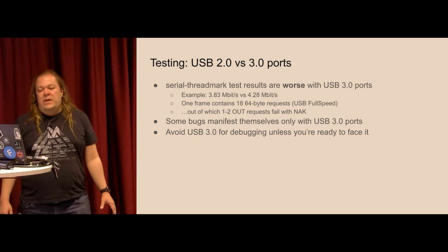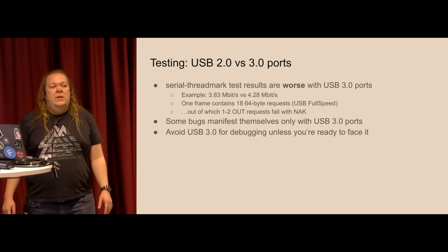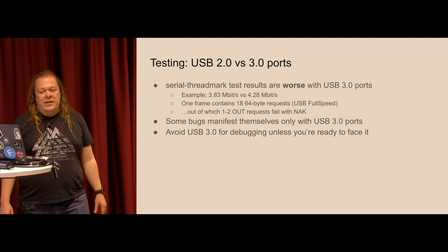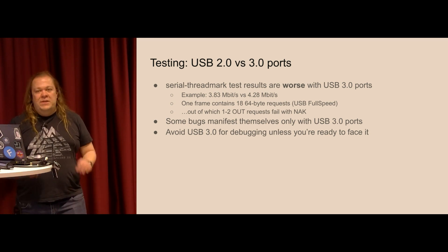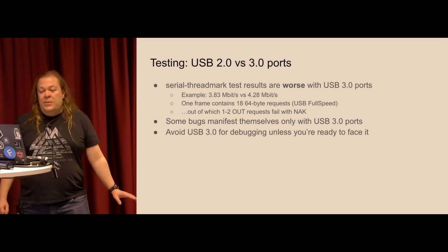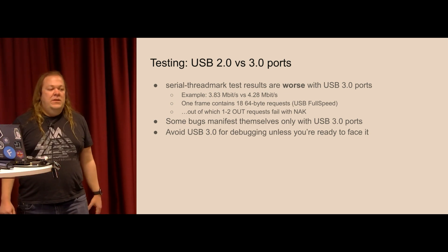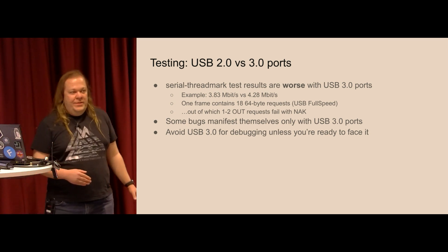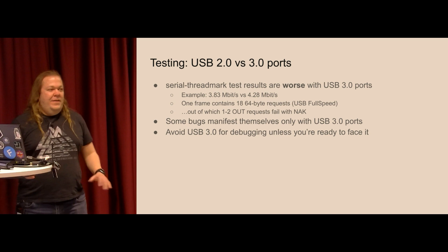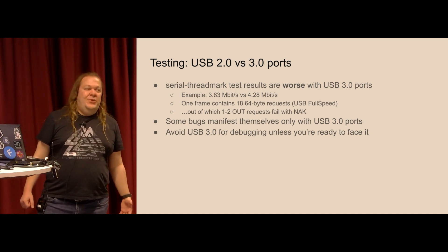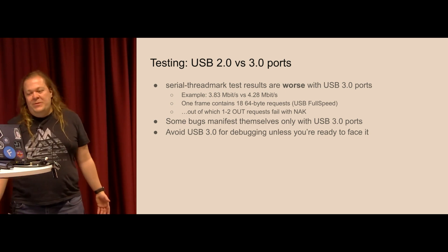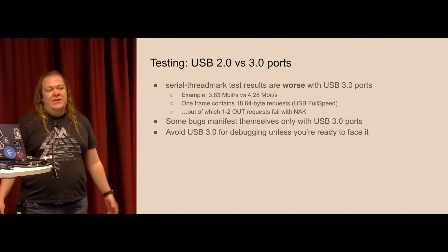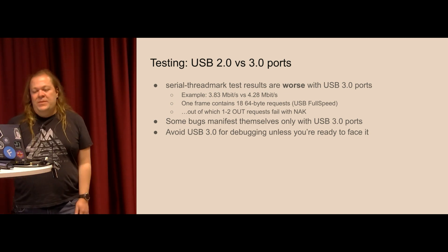Another reason to be careful with USB 3.0 ports is that some bugs manifest only there. For example, the current implementation of USB OTG with high-speed devices just fails the test completely when plugged into a 3.0 port but works fine in 2.0. My recommendation: if you're trying to debug and understand why something doesn't work, plug it first into a 2.0 port. If it works there, then the 3.0 issue is a separate story, but it's much easier to reproduce bugs without additional 3.0-related problems. Once everything is ready, then test with 3.0.